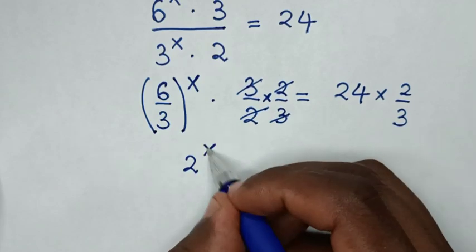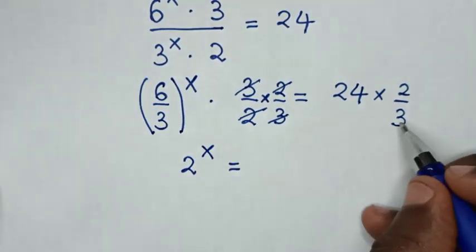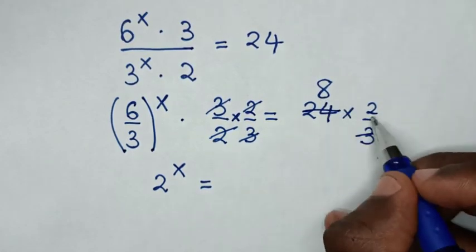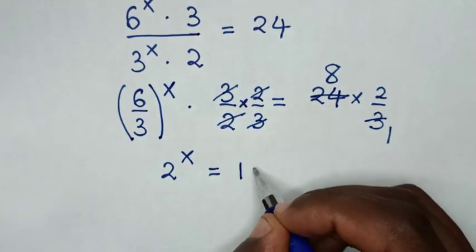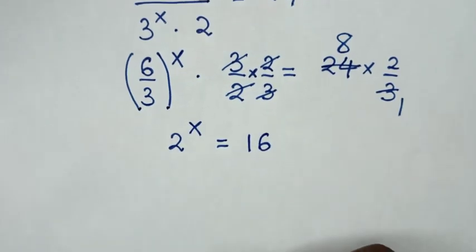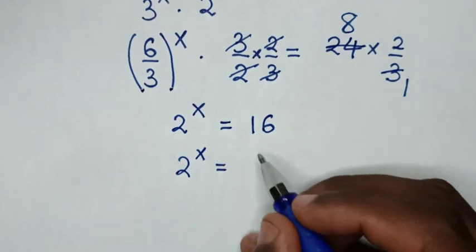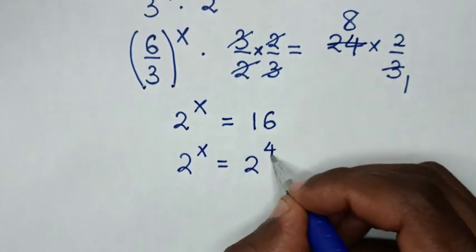Then power of x is equal to... to simplify here 3 by 1 and here 24 by 8, so 8 times 2 is 16. Then in the next step it will be 2^x is equal to 16. 16 is same as 2^4.